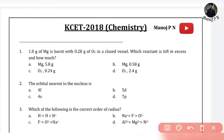Under one minute, simple. The question is: 1 gram of Mg is burned with 0.28 gram of O2 in a closed vessel. Which reactant is left in excess and how much?